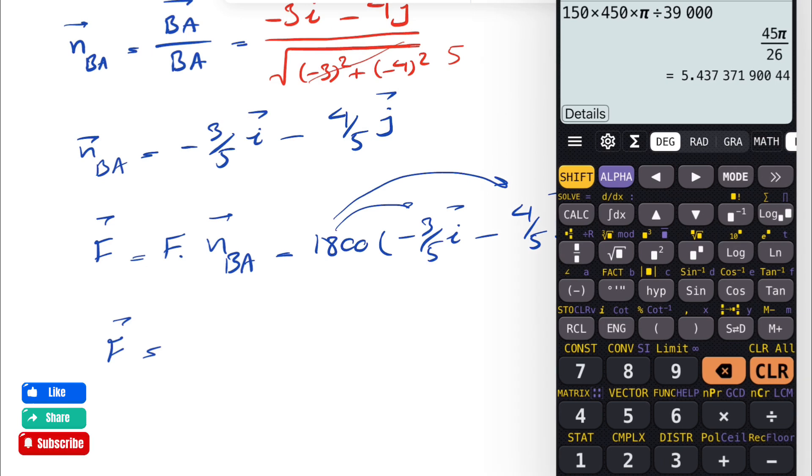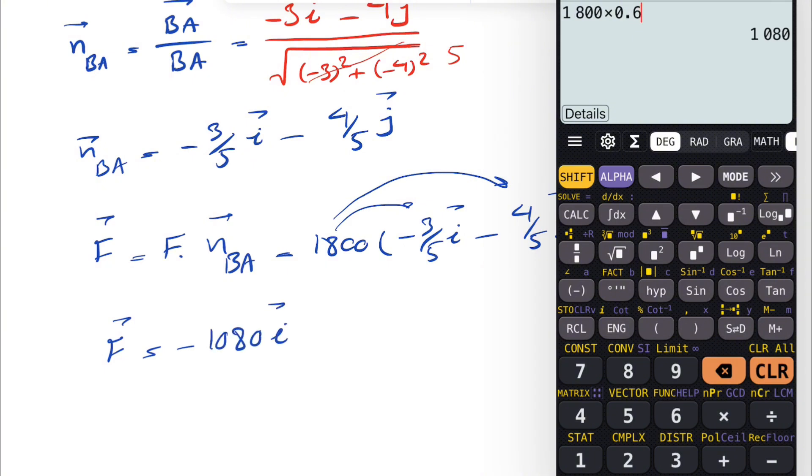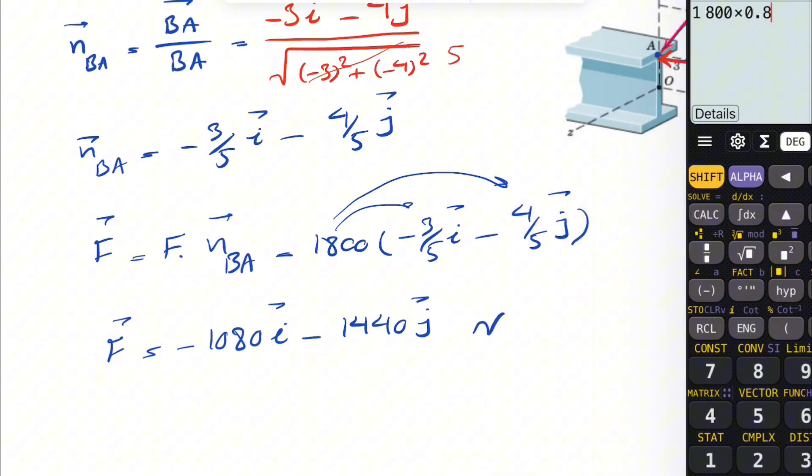We just have to multiply 1800 to each of these. So our force F would be 1800, 3 over 5 is 0.6, so times 0.6, that's going to be minus 1080i. And we're going to have also 1800 times 4 over 5 is 0.8, minus 1440j. The unit that we have for the force is Newton.